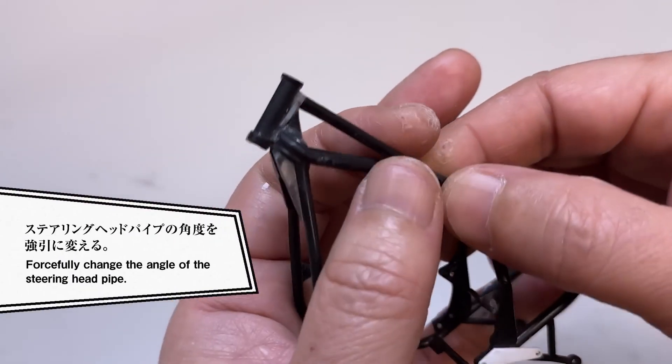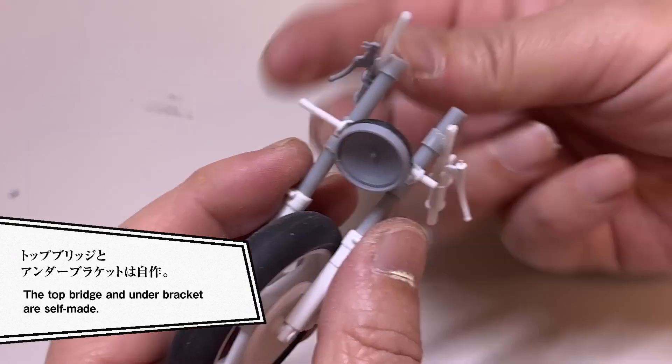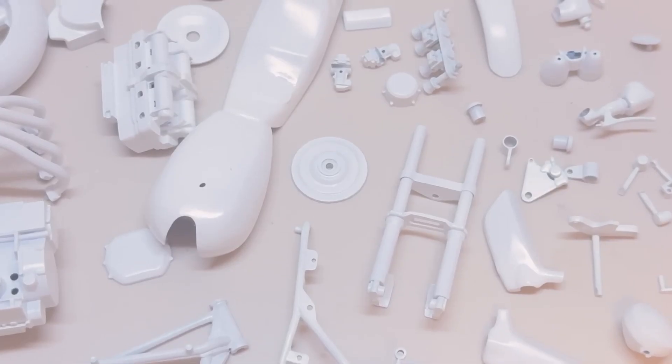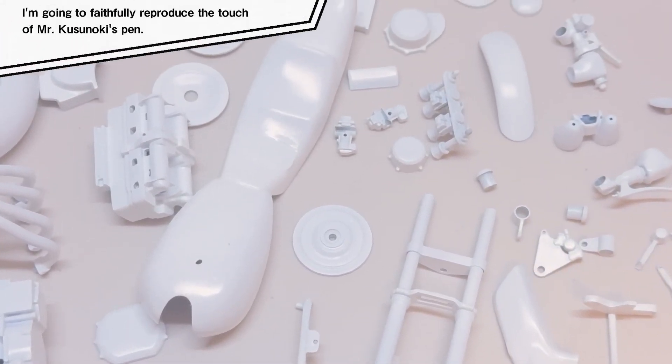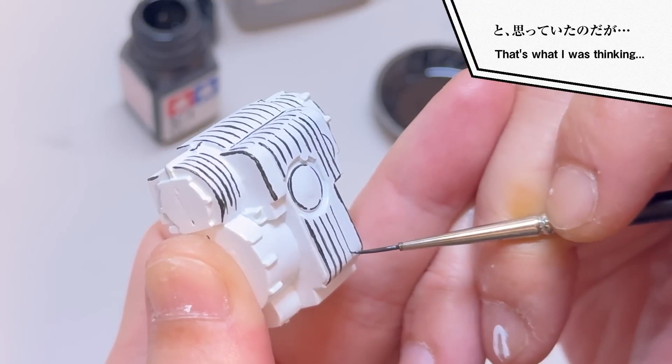They make a ton of minor adjustments to the wheelbase, the steering rake, tire size, and even remove detail from the drive chain since that would all be blurred when the bike is supposed to be in motion. But this build really comes alive when they begin painting.